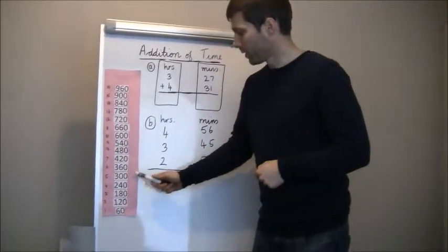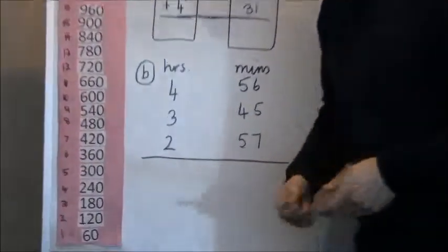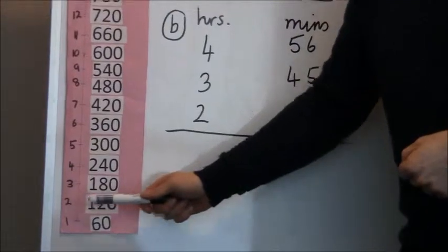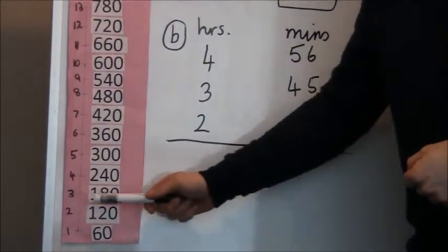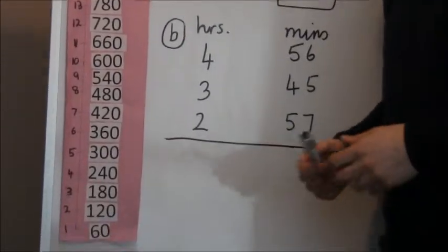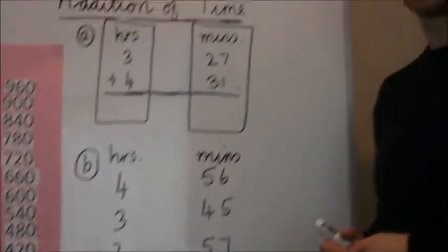This pink chart here is a very handy aid for students. It shows that there's 60 minutes in one hour, 120 minutes in two hours, 180 minutes in three hours, etc. And with practice, the children start to learn these off by heart and find converting to hours and minutes much easier.